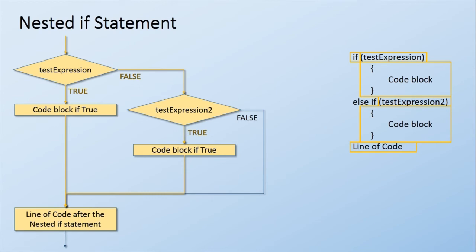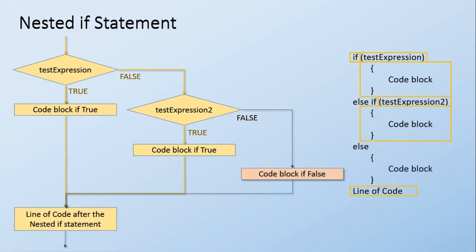You can end the nested if here, which will make the last else-if block proceed to the line of code after the entire nested if statement if the test expression is false. But optionally, you can put an else block indicated by the else keyword, which will execute if all test expressions are false. After the entire nested if, the program then proceeds to the rest of the codes.